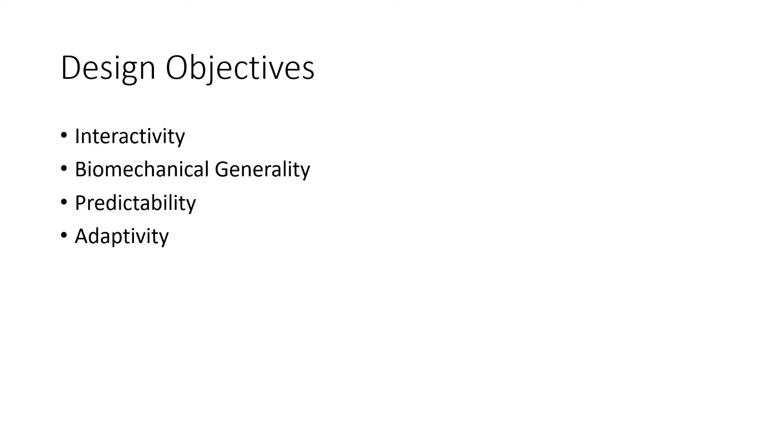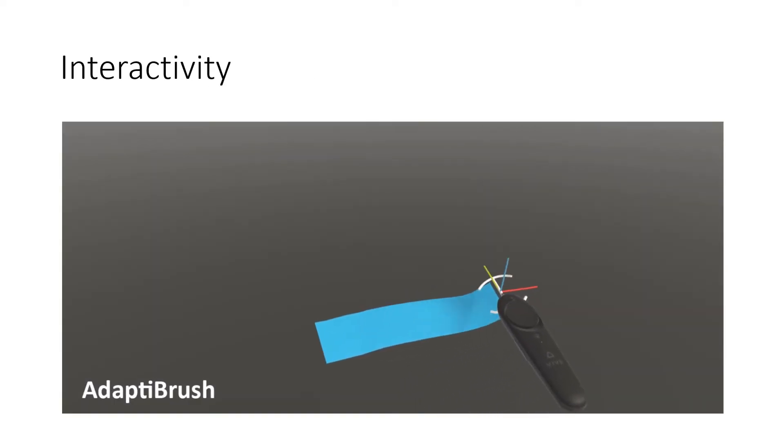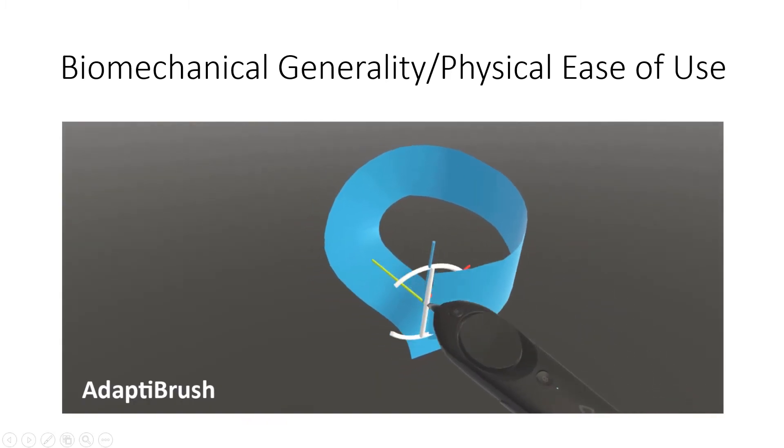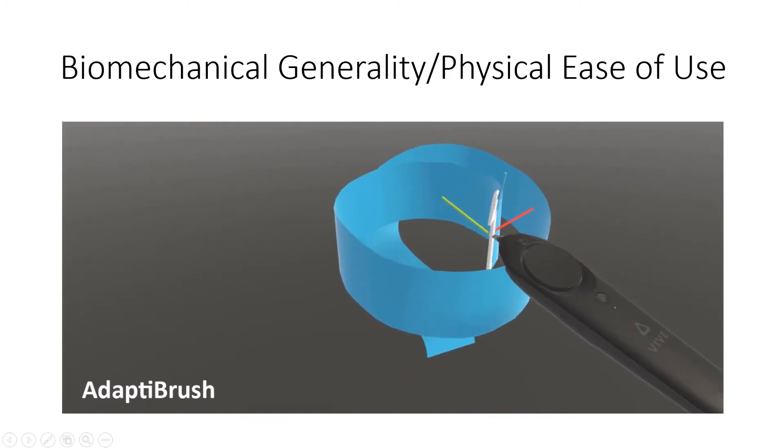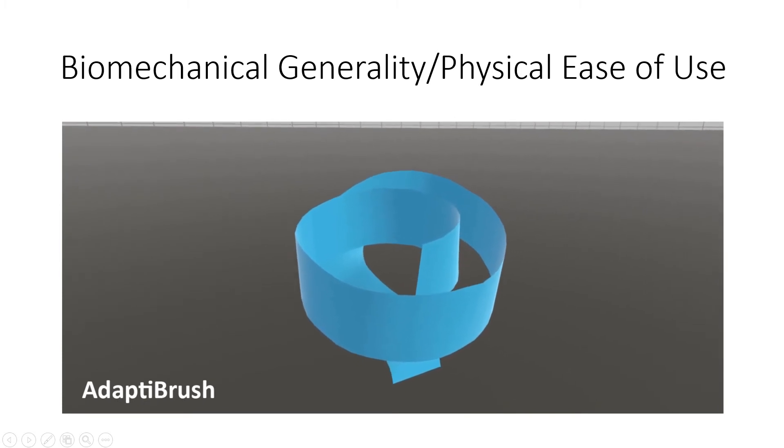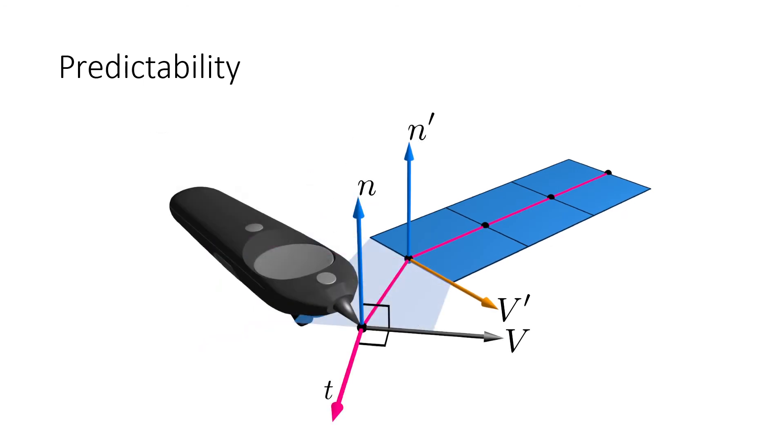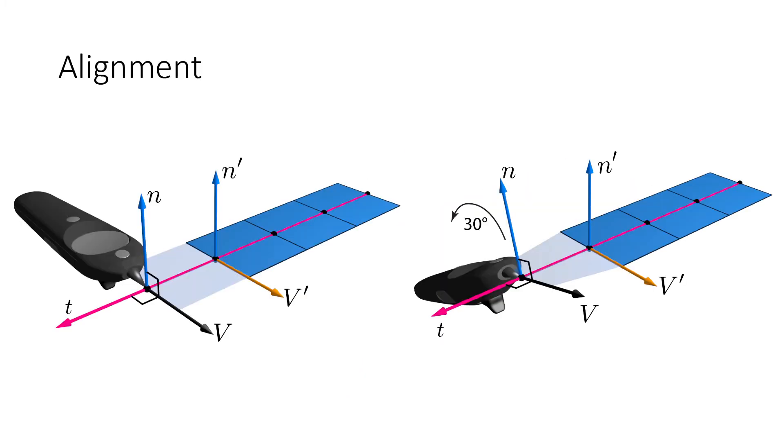Our computation is designed to satisfy four technical objectives. First, our method must be interactive, namely users must be able to see the output rulings immediately as they draw. Second, we seek a biomechanically general and physically easy to use brush by maximizing the space of ribbon geometries users can comfortably draw. Third, we aim for brush predictability, enabling users to predict the ribbon geometry resulting from their gestures. Fourth, to facilitate ease of learning and use, we aim to align the rulings with controller axes when doing so does not violate our other objectives.